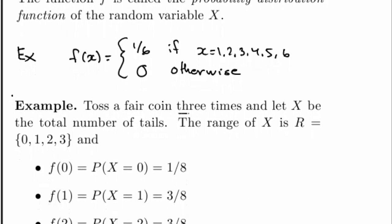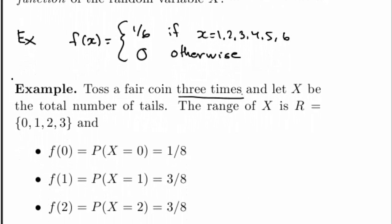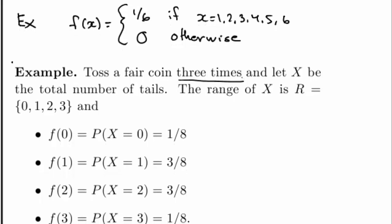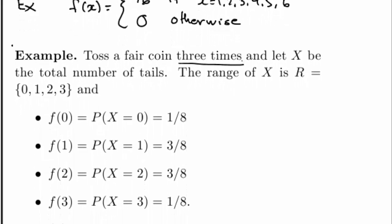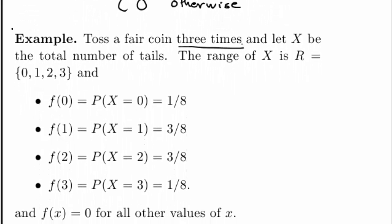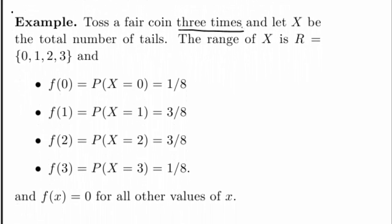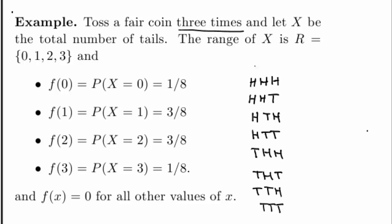For a slightly more interesting example, let's say I flip a fair coin three times. Each coin flip has two possible outcomes, so I have a total of 2 to the 3, that is eight possible outcomes in this case. These are the eight possible cases.